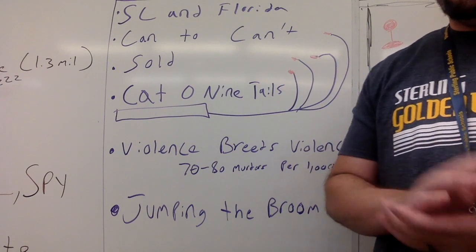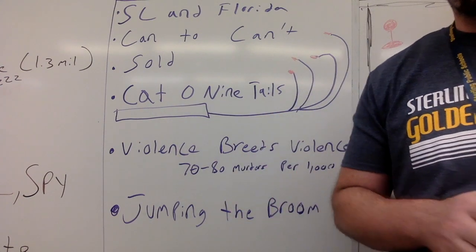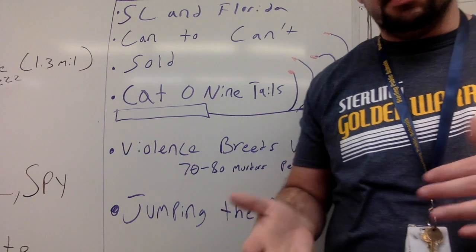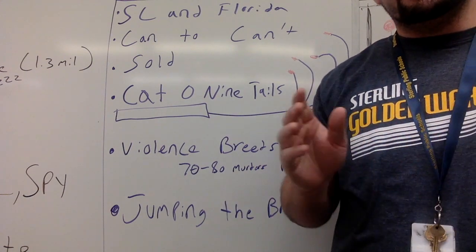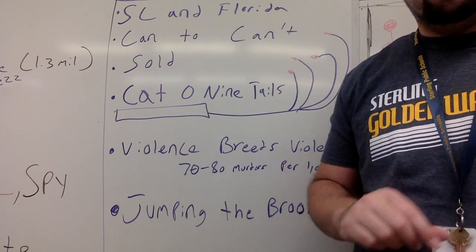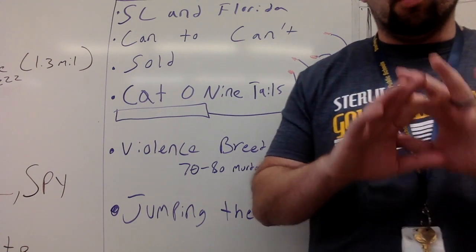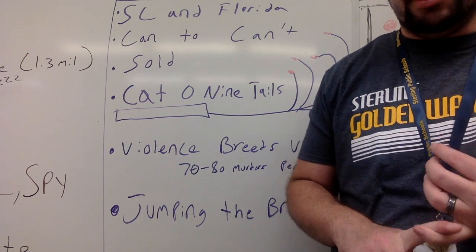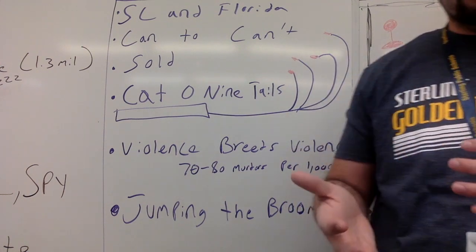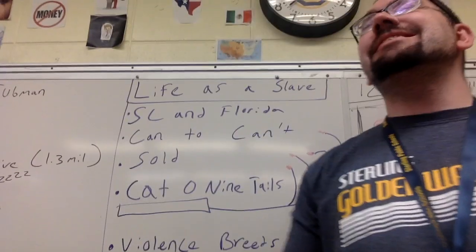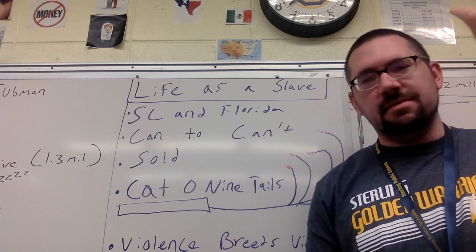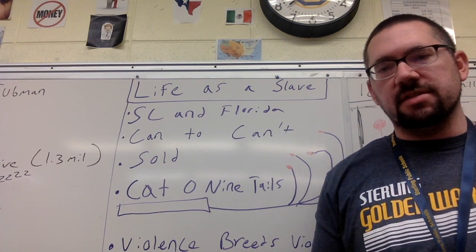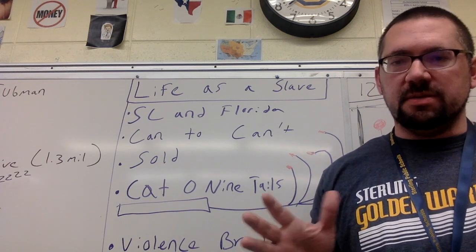Now let's talk about life as a slave. The worst work conditions were in the rice fields of South Carolina and Florida — people could die right on the job. There was also tobacco and cotton. As for hours, they worked from "can to can't" — meaning from when they can see to when they can't see, basically sunup to sundown. Some plantation owners would have slaves work until a specific task was done rather than by time.